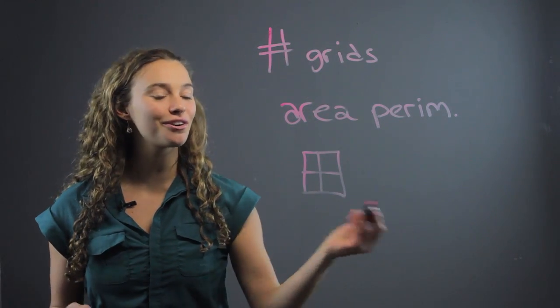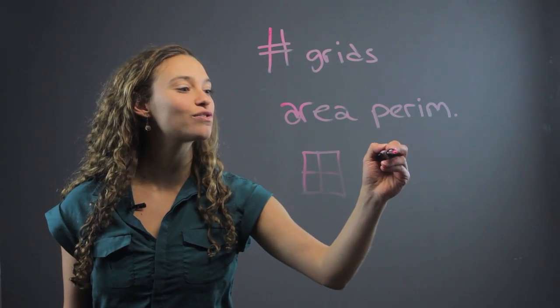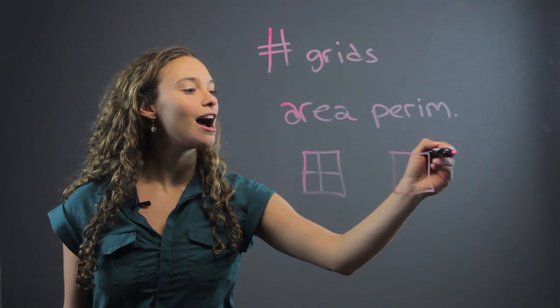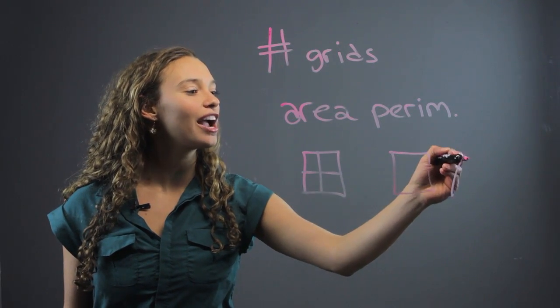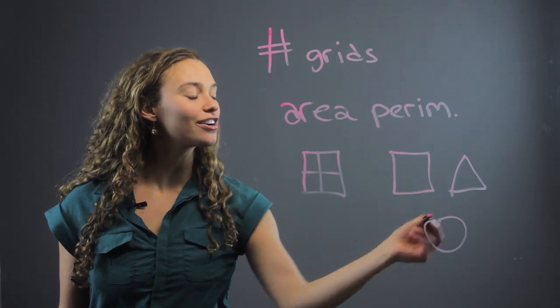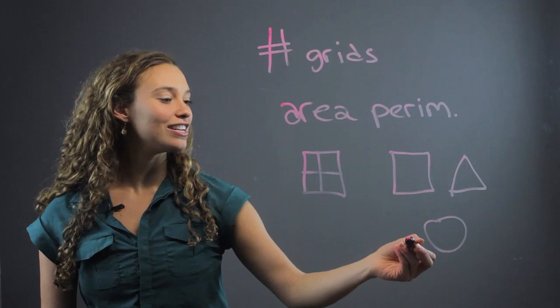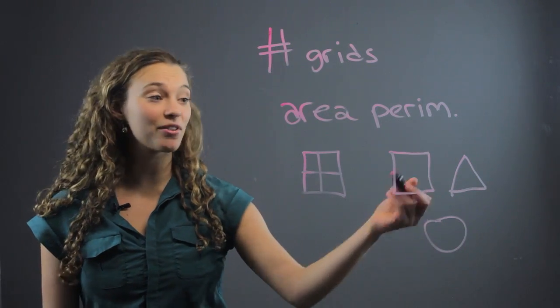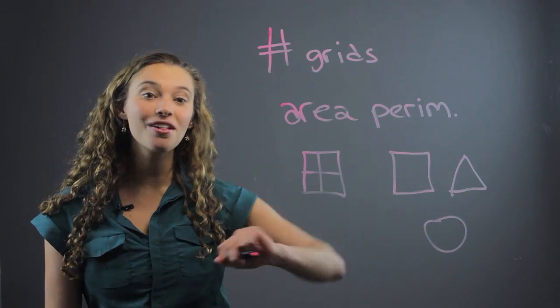You can also take chalk and have them draw different shapes — from a square to a triangle to a circle — and calculate the area or circumference of the circle.